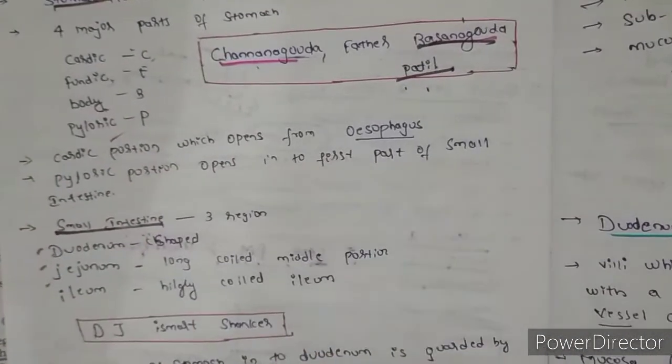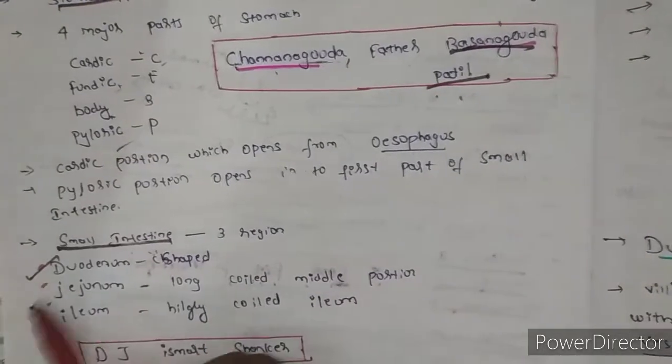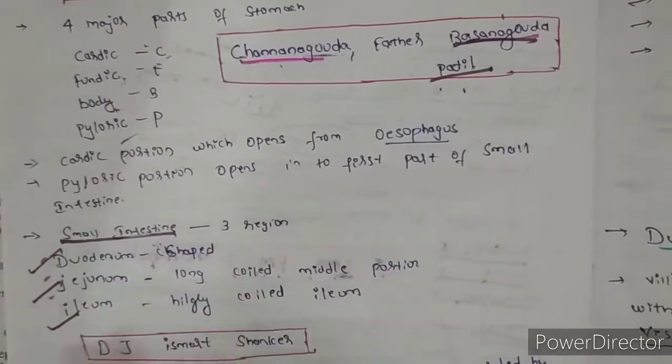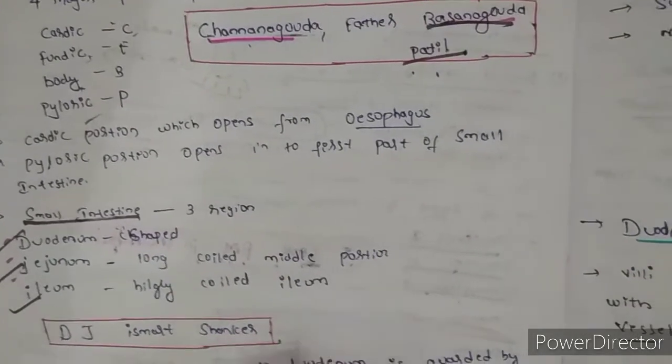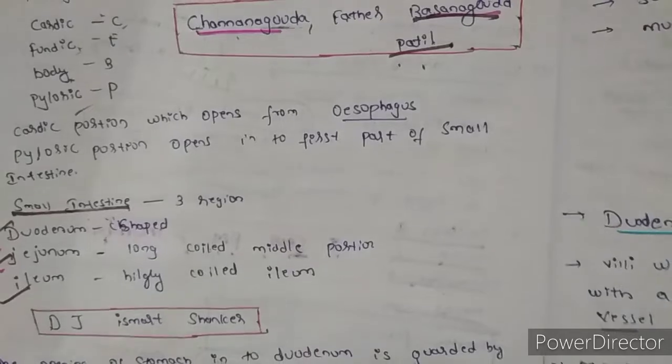When food comes to small intestine, small intestine has three: duodenum, jejunum, ileum. So duodenum is C-shaped. These three can be remembered by - you know the movie DJ Ishmaat Shankar? By this sentence you can remember the parts of small intestine.